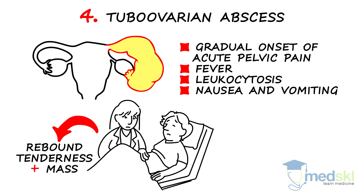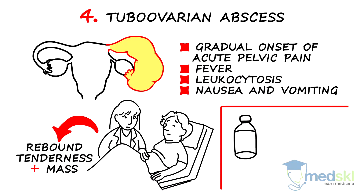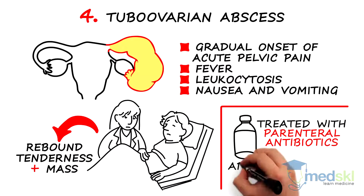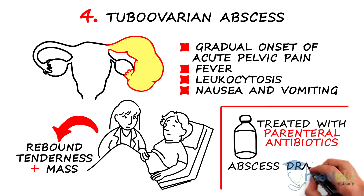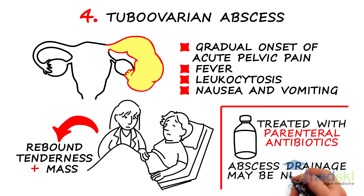Ultrasound imaging is helpful to differentiate from pelvic inflammatory disease. TOAs are one of the few abscesses that can be treated with parenteral antibiotics. If medical treatment fails, abscess drainage by interventional radiology or surgical intervention may be necessary.